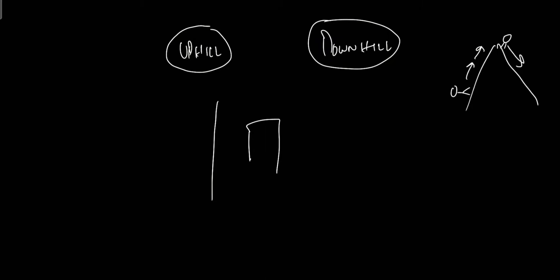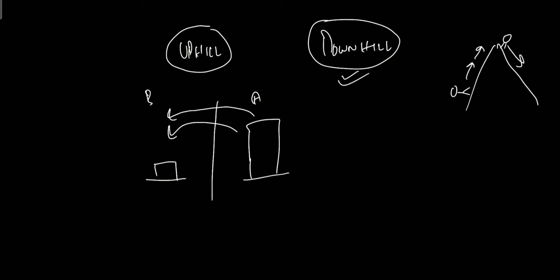This example can be applied to membrane transport as well. If there is a membrane where the concentration of solute is large on one side and less on the other, there is a concentration gradient. Movement from the high concentration side to the low concentration side requires no energy — this is a downhill movement and a passive transport. Movement from low to high concentration is an uphill movement and requires energy, making it active transport.